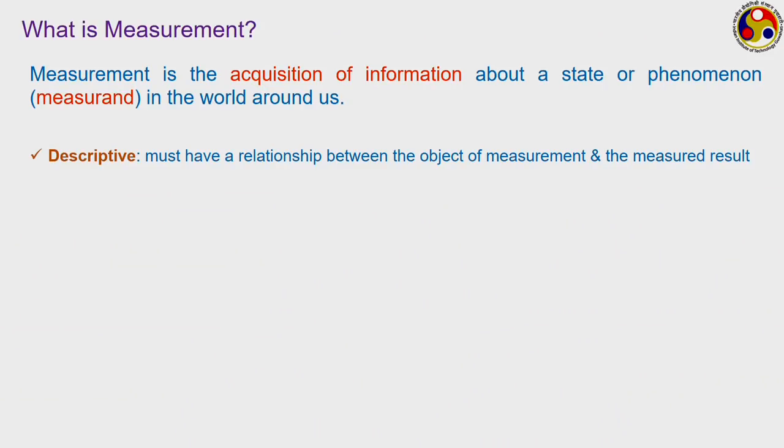Measurement primarily has to satisfy three conditions. The first one is descriptive — there must be some kind of relationship between the object of measurement and the measured result. Measurement can be anything depending on what kind of applications we are talking about. In different industrial applications, you can encounter measurement of common scientific factors like temperature, pressure, force, stress, and strain. But that does not mean all these parameters have to be real ones. Sometimes we also talk about arbitrary parameters we cannot measure directly but can measure indirectly — like entropy or enthalpy in thermodynamics, which can be measured in terms of other directly measurable parameters like pressure and temperature.